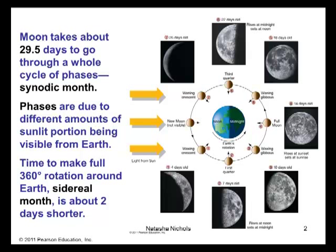Rising and setting times for some of these phases are indicated in the picture. Now, the fact that the Moon takes about 29 and a half days to go through a whole cycle of phases, we call that the synodic month. On the other hand, the time to make a full 360-degree rotation around the Earth, that is the sidereal month, and it is about two days shorter. Remember, phases are due to different amounts of sunlit portion being visible from Earth. The Moon does not produce its own light, but it reflects light from the Sun.